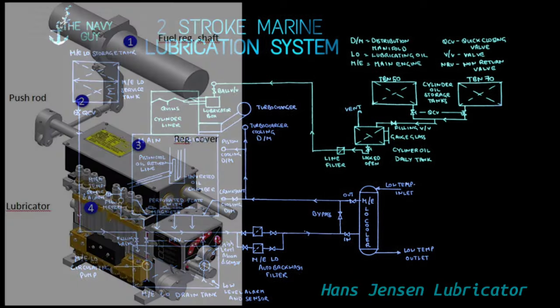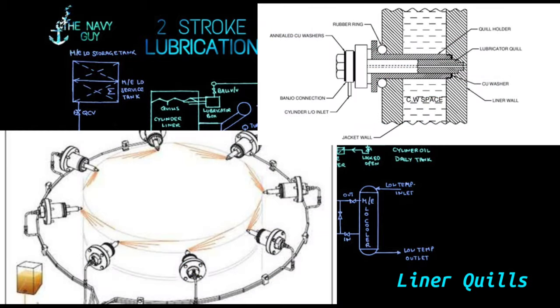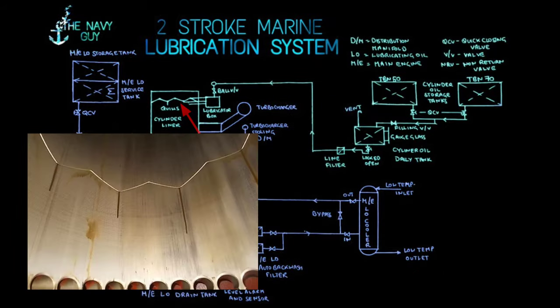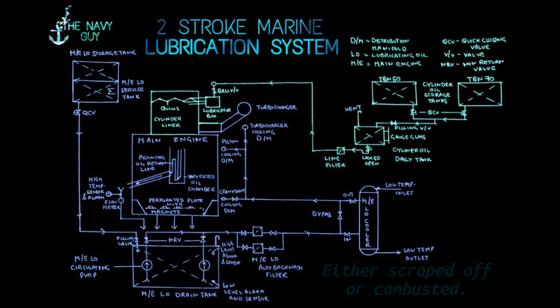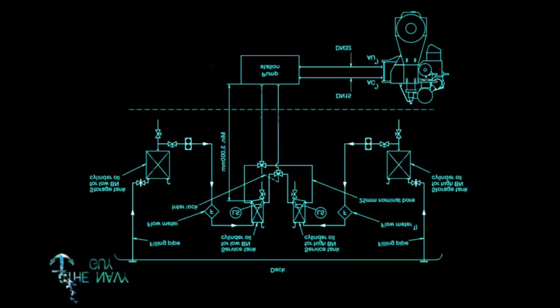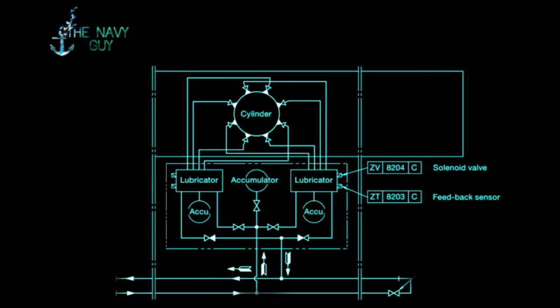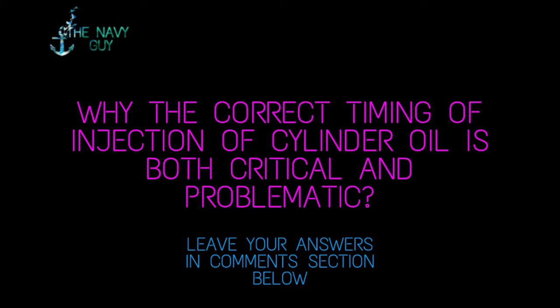Nowadays, alpha load-dependent cylinder lubrication is incorporated; earlier, Hans Jensen type lubricator boxes were used. The lubricator box, which is unit-specific, pumps cylinder oil into the liner from quills present on the liner surface. The zigzag pattern along the quills helps in circulating the cylinder oil evenly throughout the liner surface. Cylinder oil injected is either scraped off by the scraper rings in the stuffing box or is burnt during combustion. A favorite question for oral exams is: explain why the correct timing of injection of cylinder oil is both critical and problematic — the answer will be discussed in the next video.